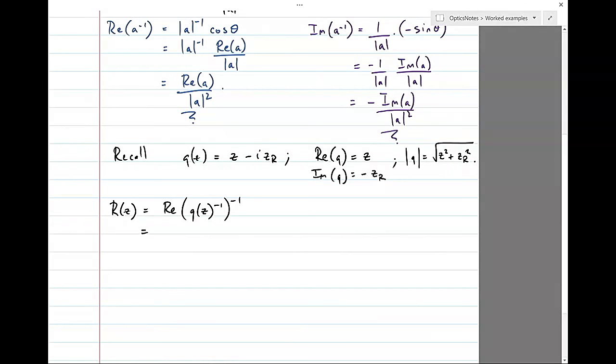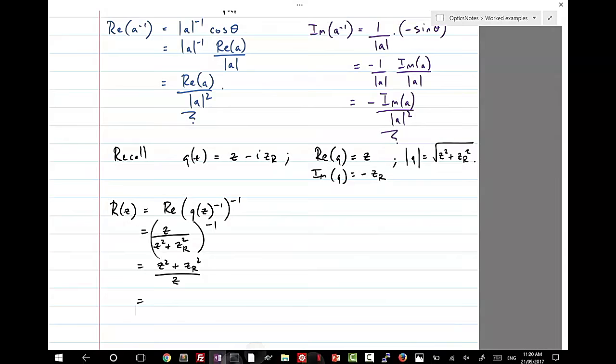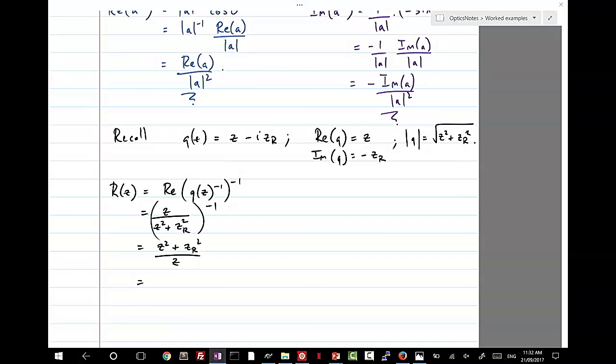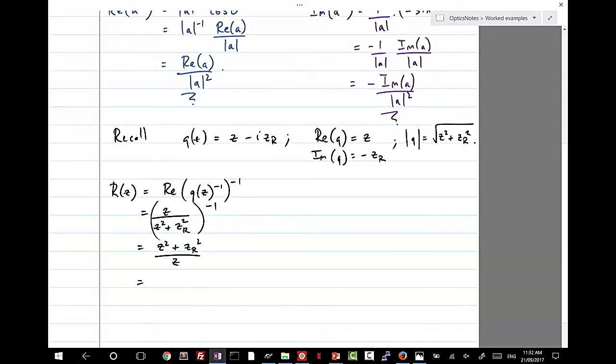Here's where we're going to use the blue identity. The real part of Q to the power of minus 1 is this. We have to take the inverse of that. That's pretty simple. It's worth dividing out this sum here because the first term is really, really simple. It is just Z squared on Z, which is Z plus ZR squared on Z.